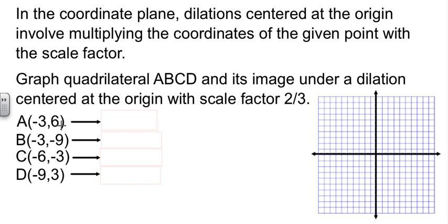So we're going to graph this quadrilateral. Well, we know how to graph that. Negative three, six. Negative three, nine. Negative six. Hey, why'd you let me get away with that? That's negative three, negative nine. Helps to read the problem, Skinner. Negative six, negative three. And negative nine, three. And we have a quadrilateral.